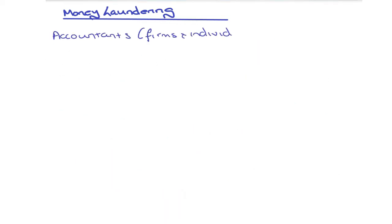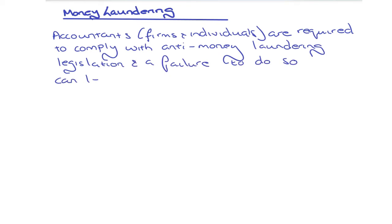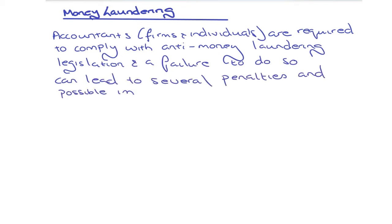Accountants — both firms and individuals — are required to comply with anti-money laundering legislation, and failure to do so can lead to severe penalties and even imprisonment. All firms need to ensure staff are aware of money laundering and their obligation to detect and report it. Because accountants are bound by a duty of confidentiality, guidance is required to explain when they can override that duty and to whom they should report suspicions — for example, industry regulators or the company's audit committee.